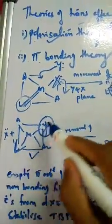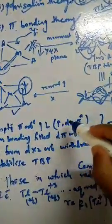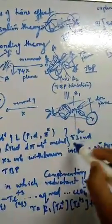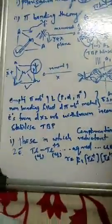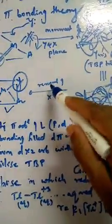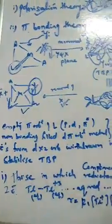So the ligand L placed trans to X has made this displacement possible because of its tendency to form a pi bond. The empty pi orbitals of L — p, d, or pi-star — overlap with the non-bonding filled d-pi orbitals of the metal, forming the pi bond. The electrons from the d-xz plane are withdrawn, stabilizing the intermediate, enabling easy removal of the trans ligand X and its replacement by the incoming nucleophile Y.